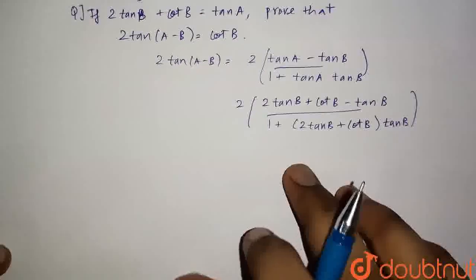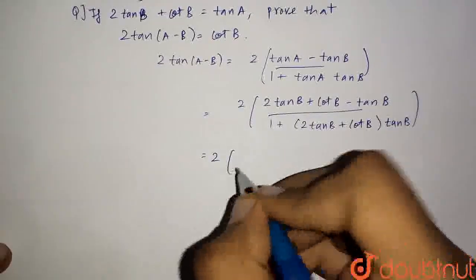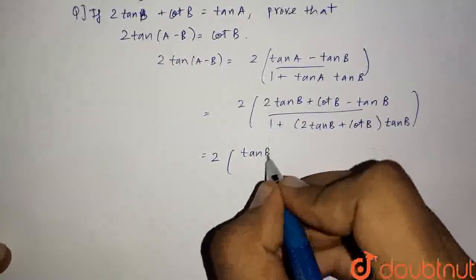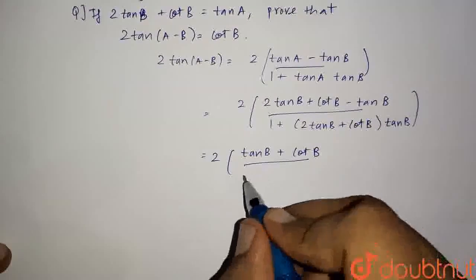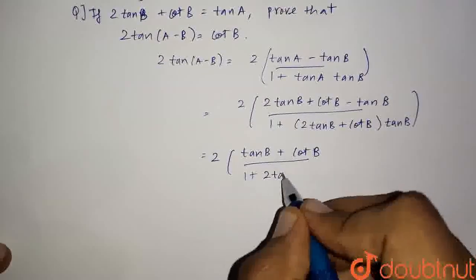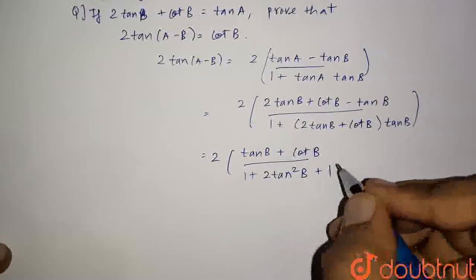Therefore, 2 tan b minus tan b leaves us with only 1 tan b. It will equal 2 into tan b plus cot b whole upon 1 plus. We will get 2 tan square b and cot b into tan b equals 1.